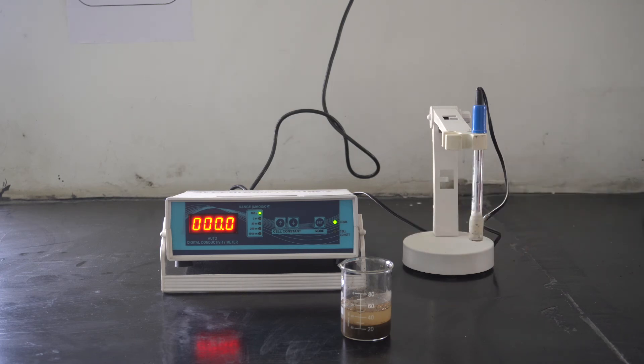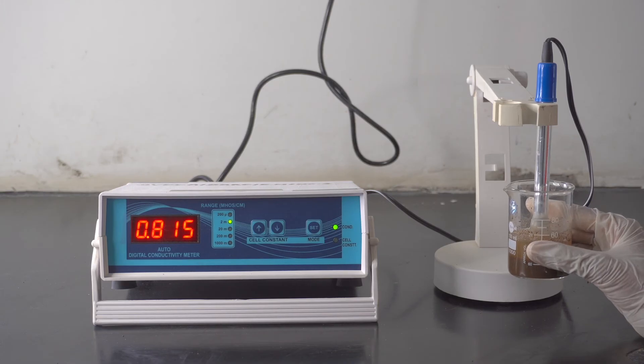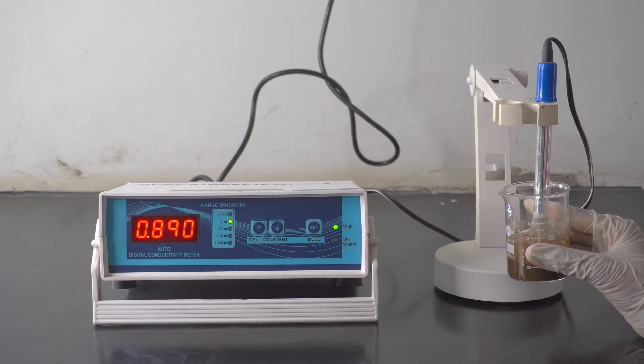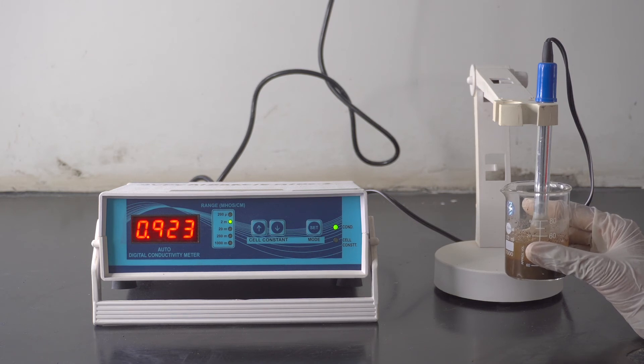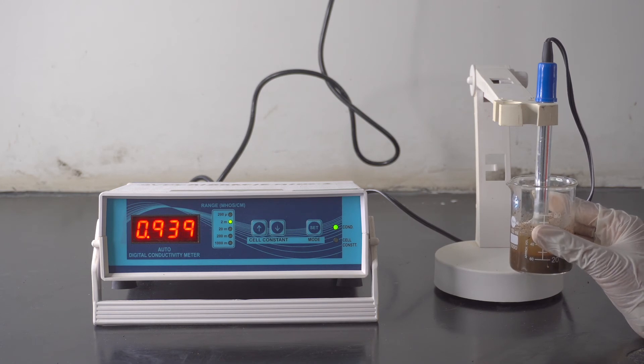Lastly, place electrode in settled soil mixture and measure electrical conductivity of saturated extract which is visible above settled soil mixture. Once we get the reading, record it in notebook.